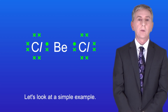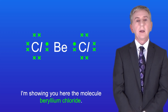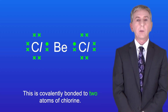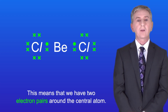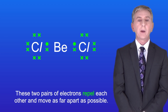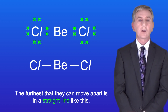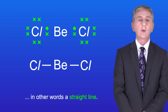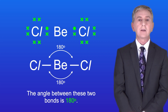Let's look at a simple example: beryllium chloride. In this molecule the central atom is beryllium, covalently bonded to two atoms of chlorine, giving us two electron pairs around the central atom. These two pairs of electrons repel each other and move as far apart as possible — the furthest they can move is in a straight line. Scientists say this molecule has a linear structure, and the angle between the two bonds is 180 degrees.